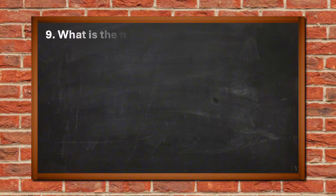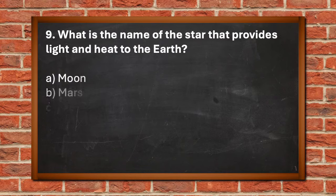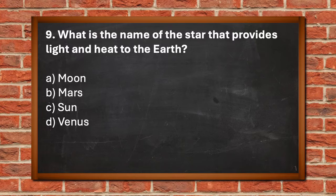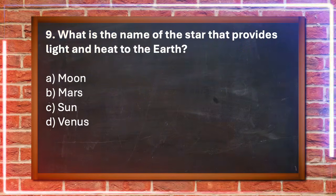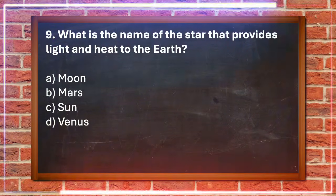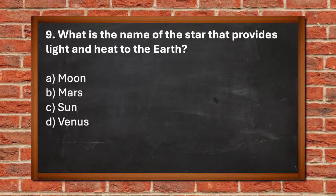Number 9. What is the name of the star that provides light and heat to the earth? A. Moon, B. Mars, C. Sun, D. Venus. The answer is C. Sun.